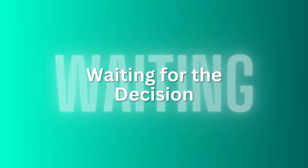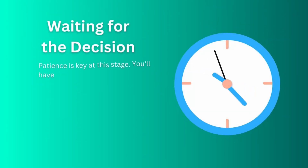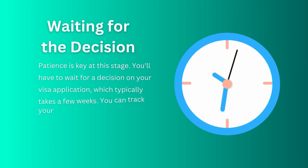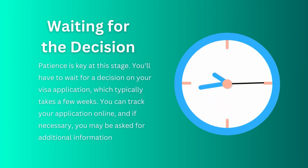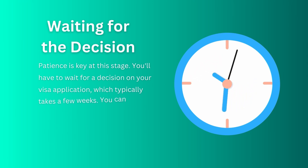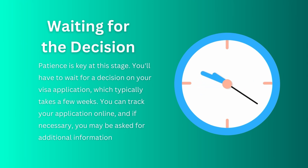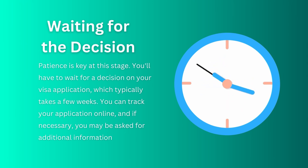Now the most boring part — waiting for the decision. Once you have submitted your application, you have to wait for the decision. Patience is key at this stage. You will have to wait for a decision on your visa application, which typically takes a few weeks. You can track your application online and, if necessary, you may be asked for further information, so make sure you don't miss any important emails or messages from the visa authority.